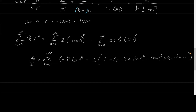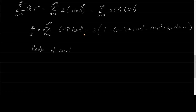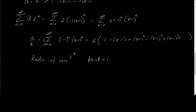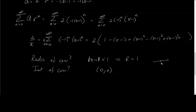What is the radius of convergence? We need absolute value of x minus 1 to be less than 1, because we're centered at 1 and it must satisfy the geometric series condition. So our radius is 1. The interval of convergence — centered at 1 with radius 1 — goes from 0 to 2.